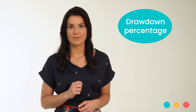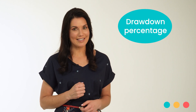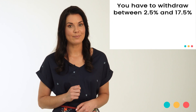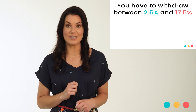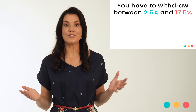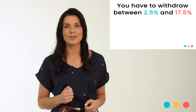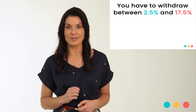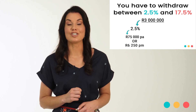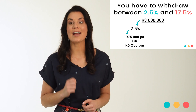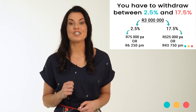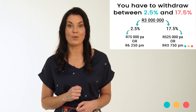This five percent is known as your drawdown percentage — the percentage you're withdrawing or drawing down from your living annuity. This drawdown percentage is set when you buy the living annuity and you can review it every year. Legally, you are forced to withdraw between a minimum of two and a half percent and a maximum of seventeen and a half percent. In our example, the minimum amounts to just over six thousand rand per month, and the maximum is just over forty-three thousand rand per month.